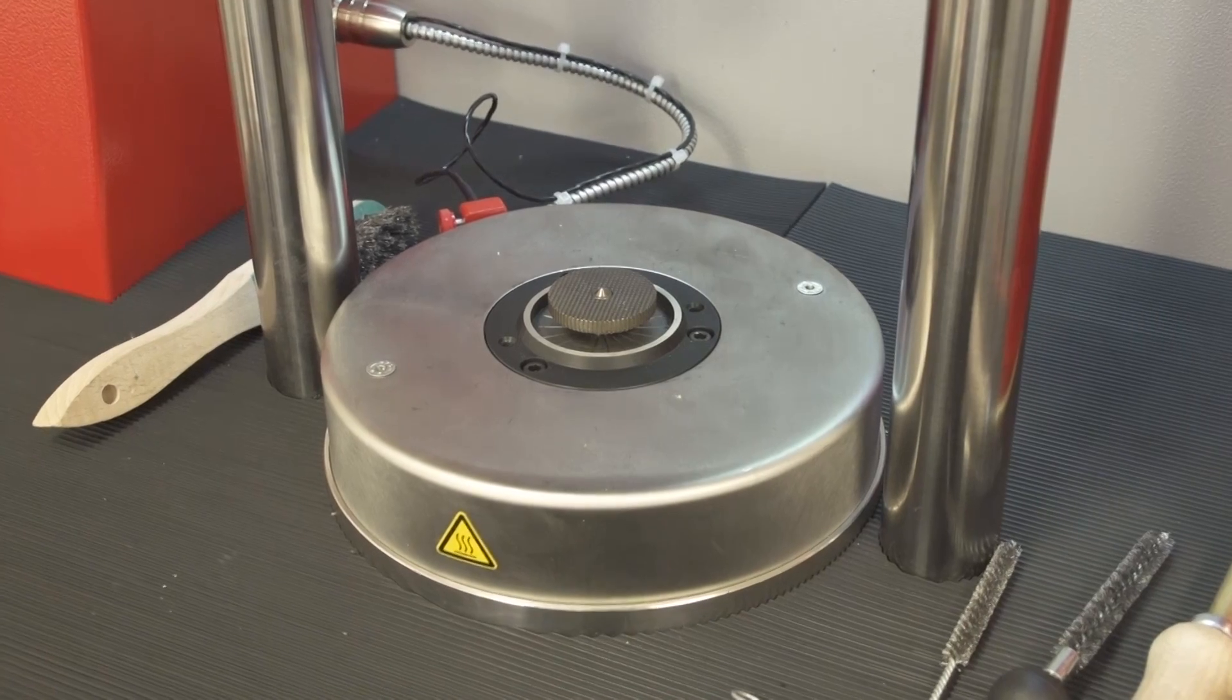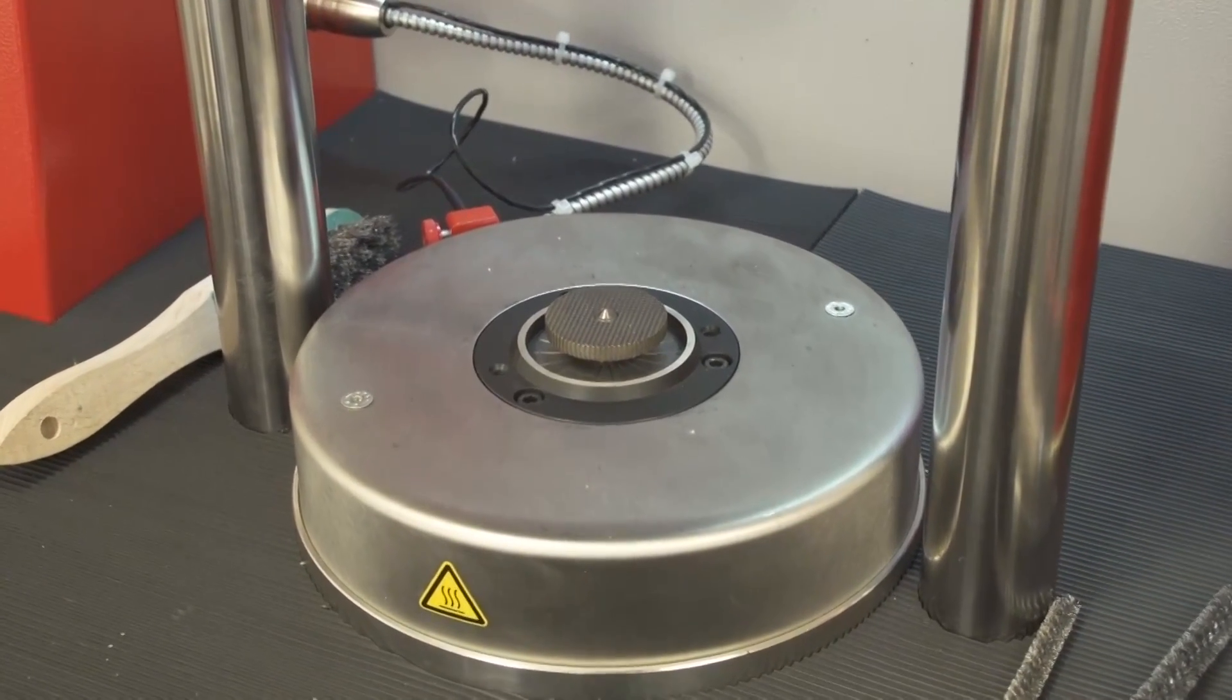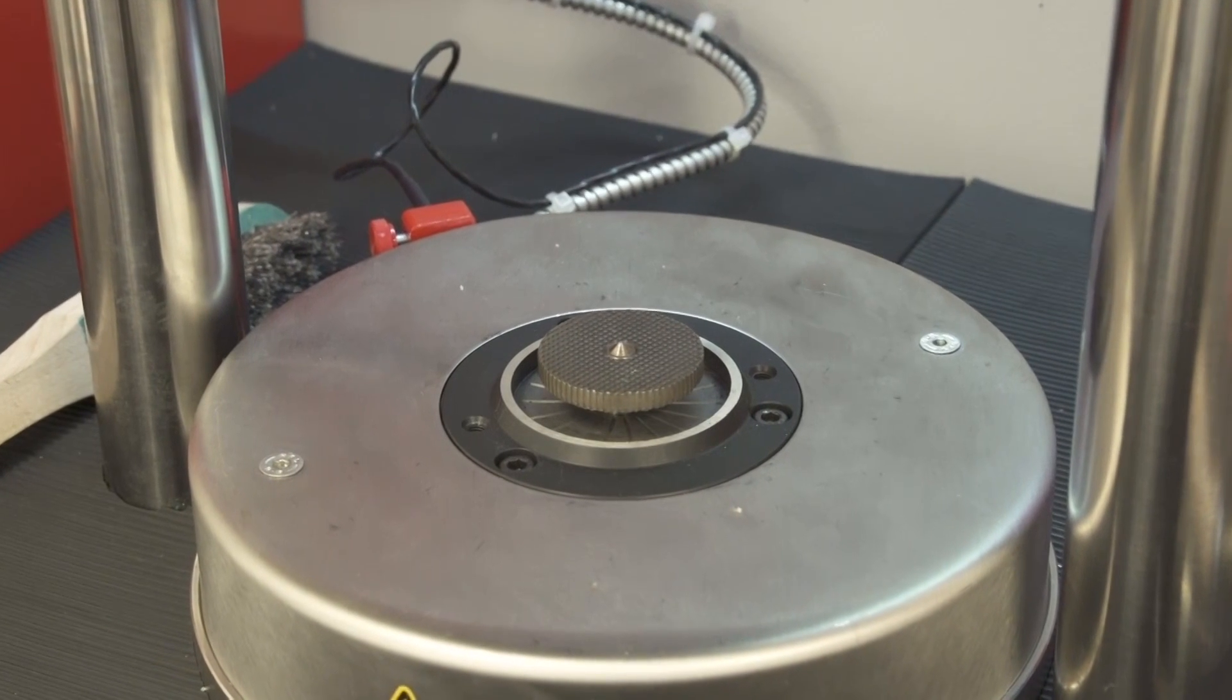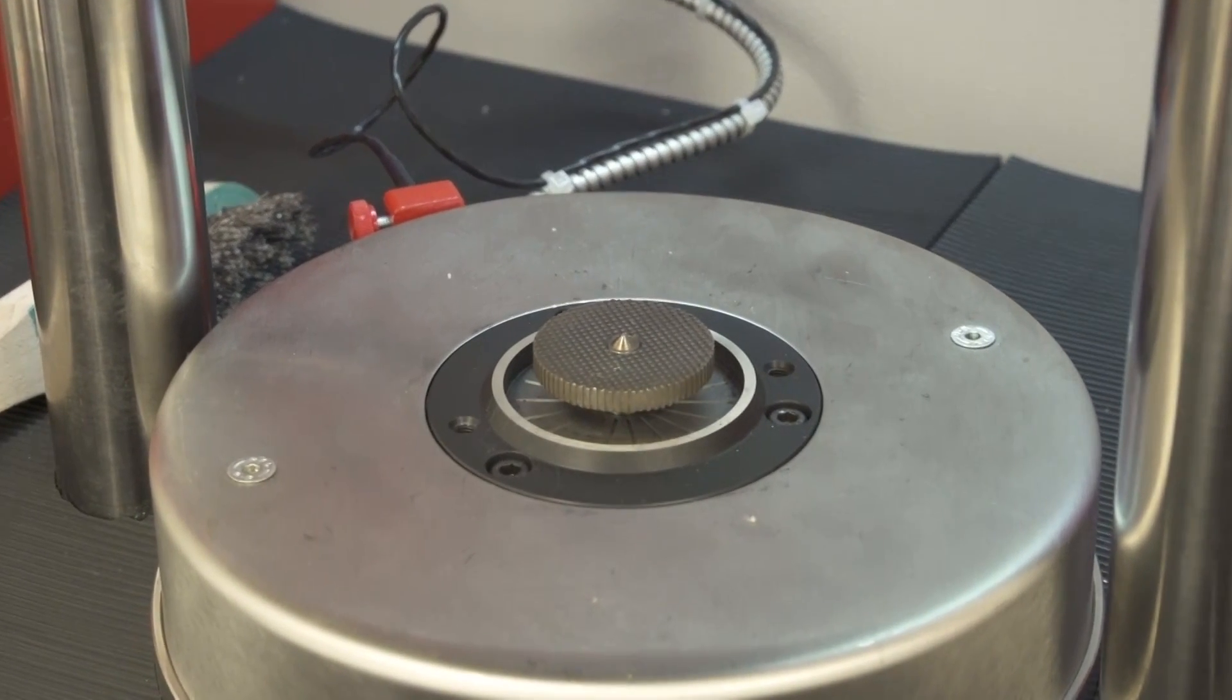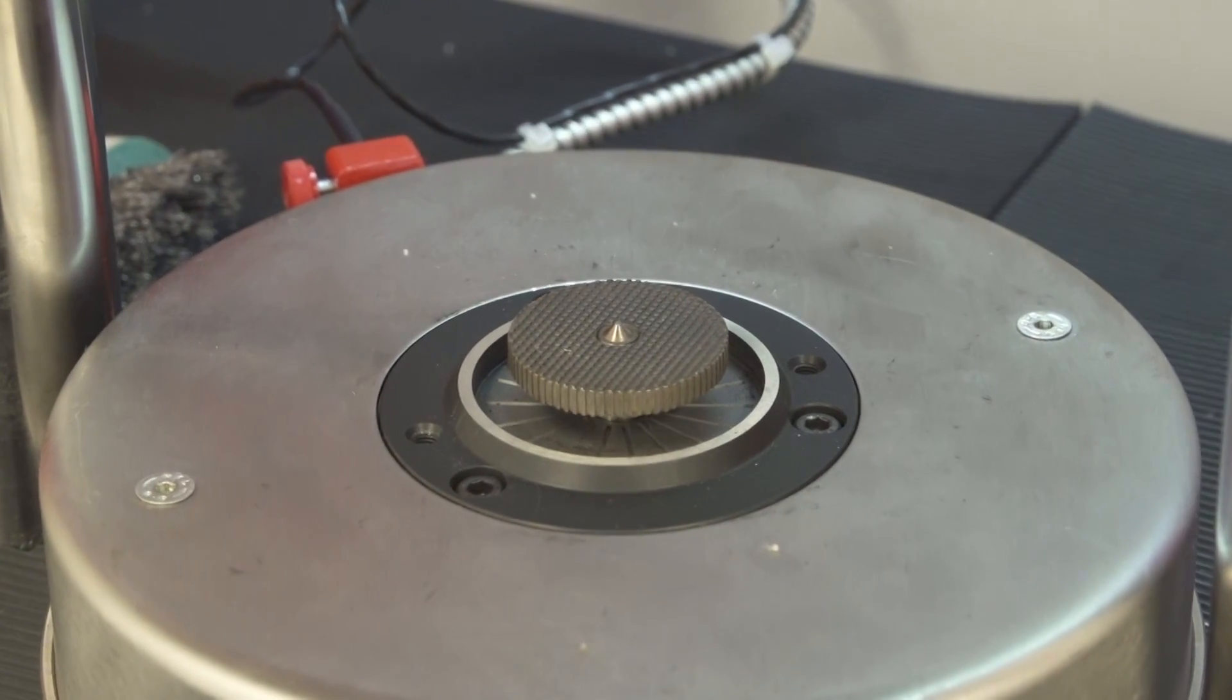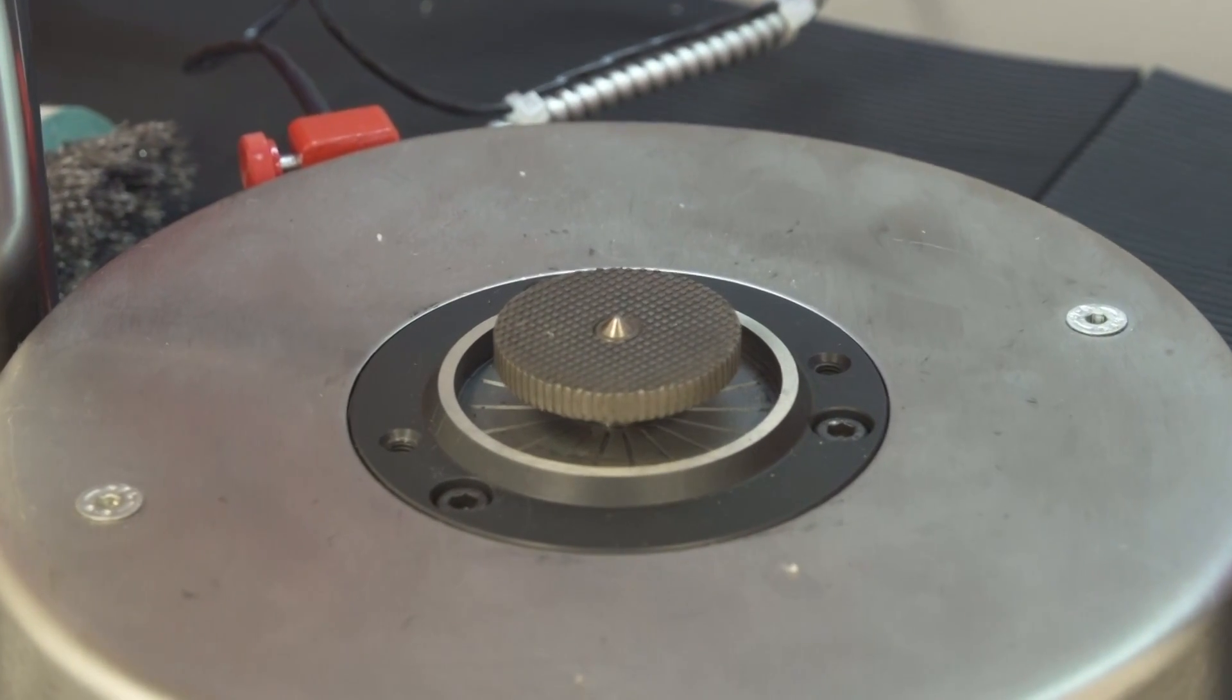Whenever the test temperature is changed or after every twenty-five tests, a balancing of the Mooney viscometer is required. Balancing means that the friction of the rotor seal is measured, which is then used as a compensation during every test.